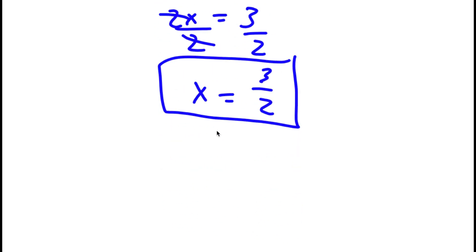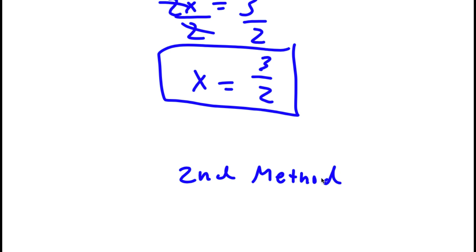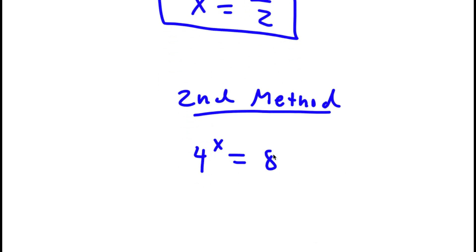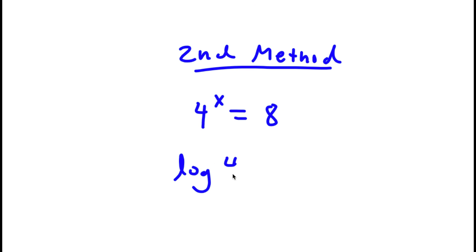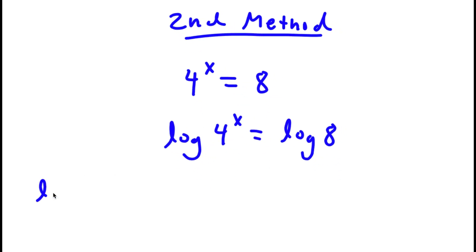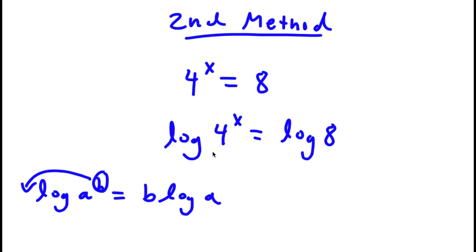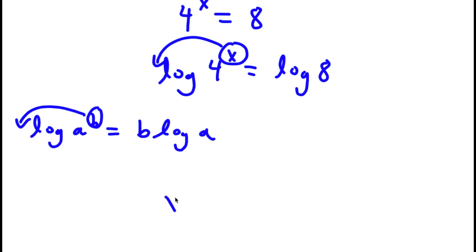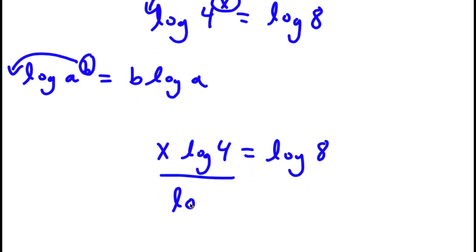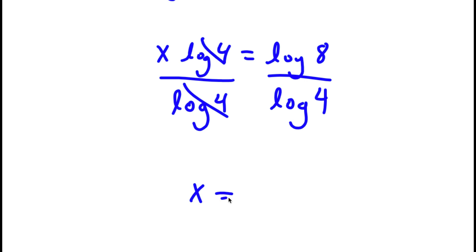There's actually a second method of solving this problem. Again, I first start with 4 to the power of x is equal to 8, but this time I'm going to take the log on both sides. So now I have log 4 to the power of x is equal to log 8. If I have something in the form log a to the power of b, I can move the exponent b to the front — so this equals b times log a. For log 4 to the power of x, I move x to the front: x times log 4 is equal to log 8. I can simply divide both sides by log 4. These two cancel out, and I'll be left with x is equal to log 8 over log 4.